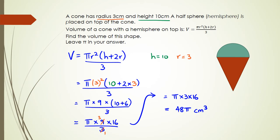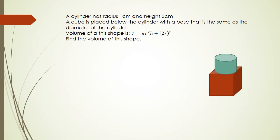Let's have a look at the next question. This time we have a cylinder which has a radius of 1 centimeter and a height of 3 centimeters. A cube is placed below the cylinder with a base that is the same as the diameter of the cylinder. The diameter of the cylinder is 2 centimeters, which means this cube has a base of 2 centimeters. Because it's a cube, all sides are equal, so that's 2 centimeters.